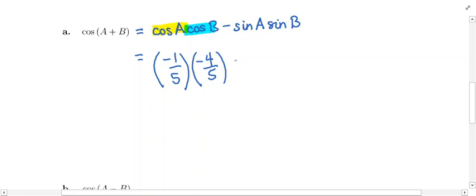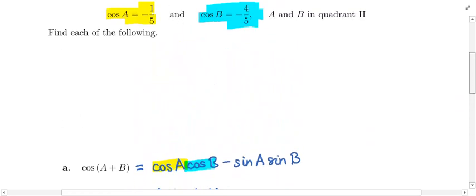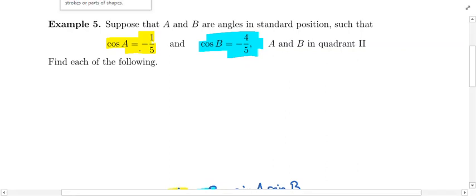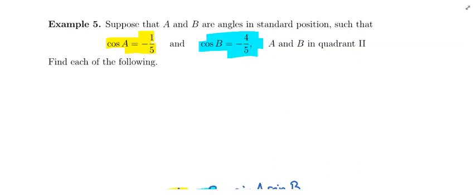Then we have to subtract the sine of A times the sine of B. Here's where we hit the roadblock, because we don't know what the sine of A is, and we don't know what the sine of B is — we're going to have to figure it out. A and B are angles, and both of them are in quadrant 2.